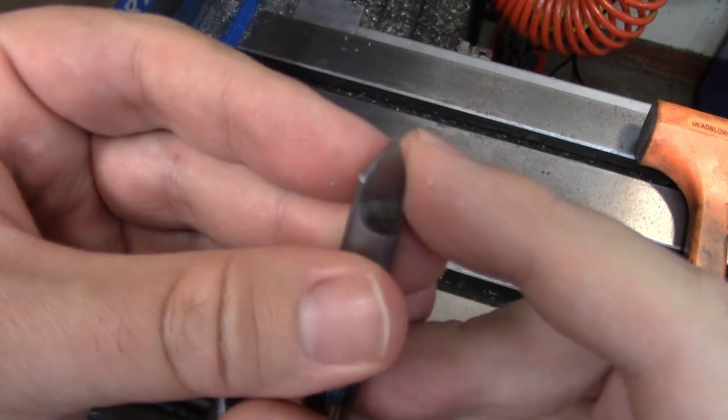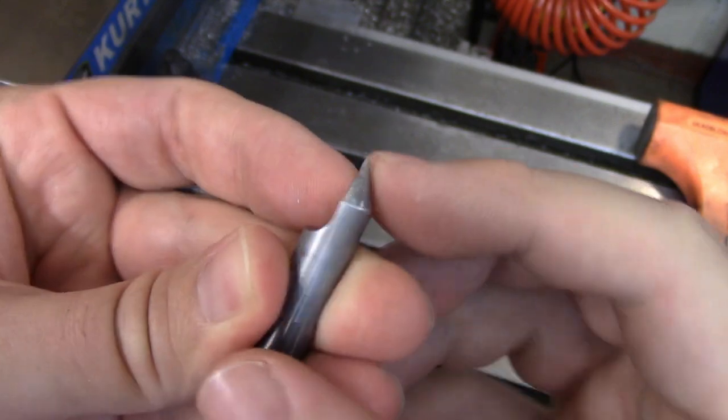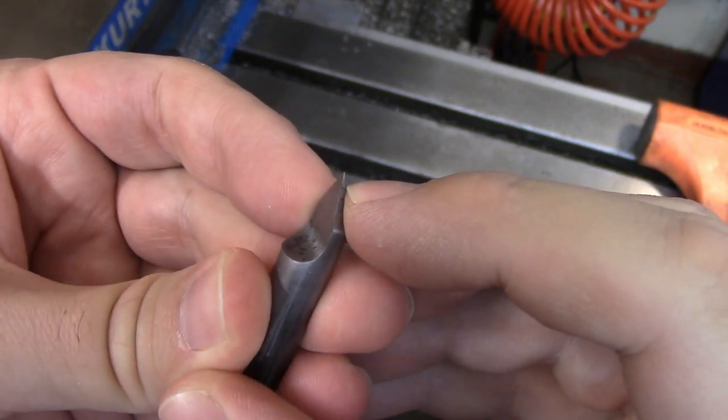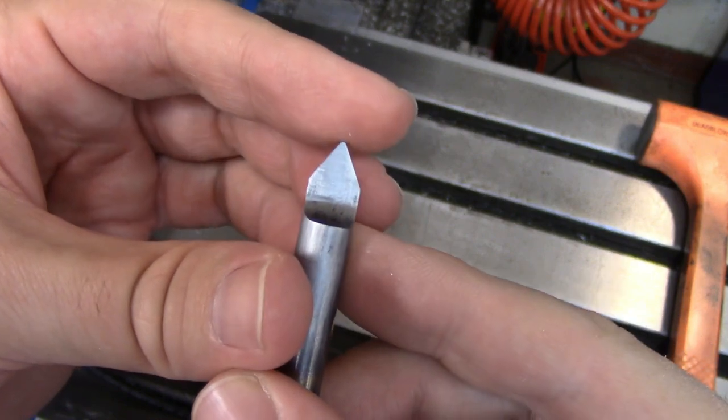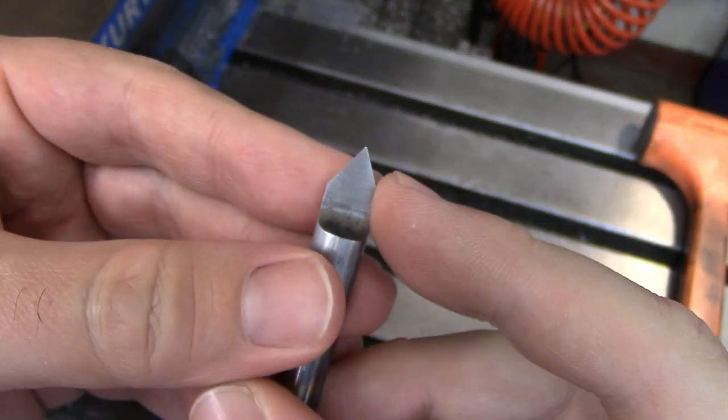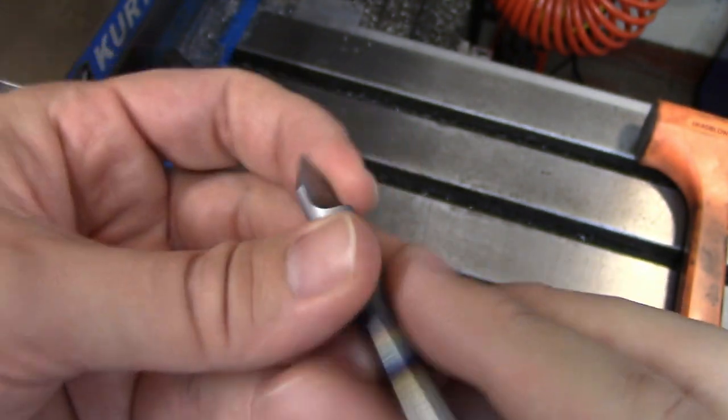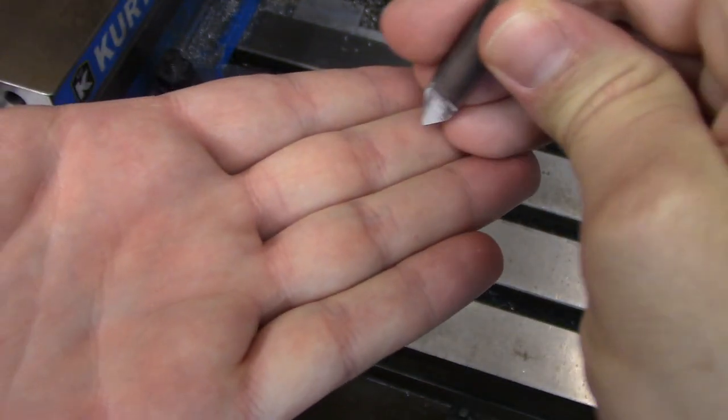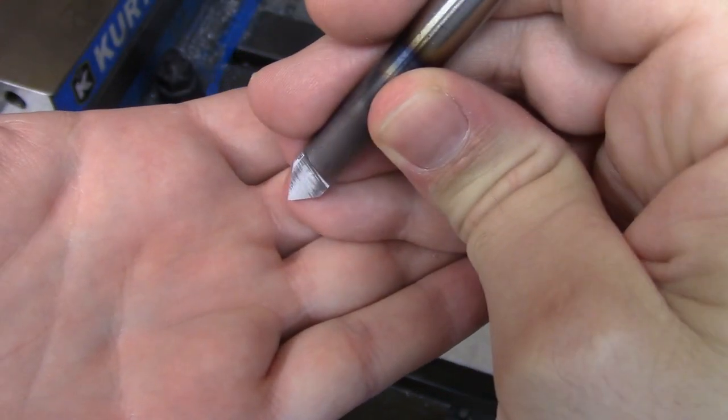But yes, ideally on any kind of cutting tool, you would have some kind of relief so this backside isn't dragging. Speaking of dragging, you could just drag this across the part as well. And I did that to get rid of some of the burrs. I just didn't put it on camera. There's no reason that this wouldn't work just dragging right across the piece and cutting the line that way.